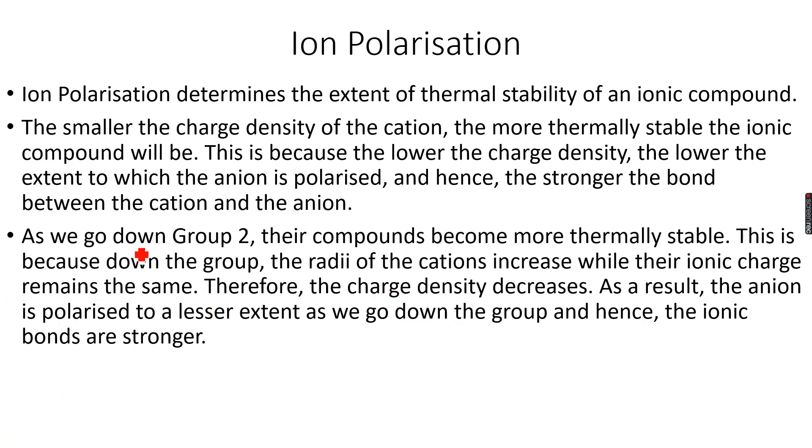We were just talking about Group 2. We go from Mg, then to Ca, and then further. As we go down Group 2, their compounds become more thermally stable. This is because down the group, the radii of the cations increase while their ionic charge remains the same. Therefore, the charge density decreases down the group.